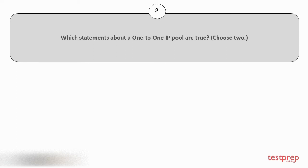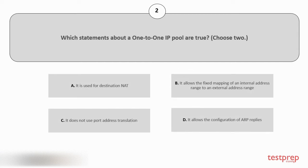Question number 2. Which statements about a one-to-one IP pool are true? Choose 2. Your options are: A) it is used for destination NAT; B) it allows the fixed mapping of an internal address range to an external address range; C) it does not use port address translation; D) it allows the configuration of ARP replies.